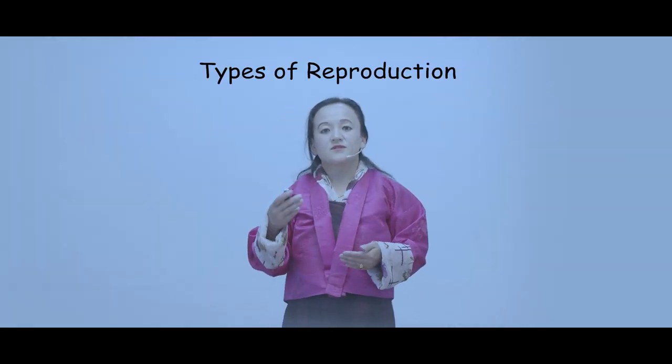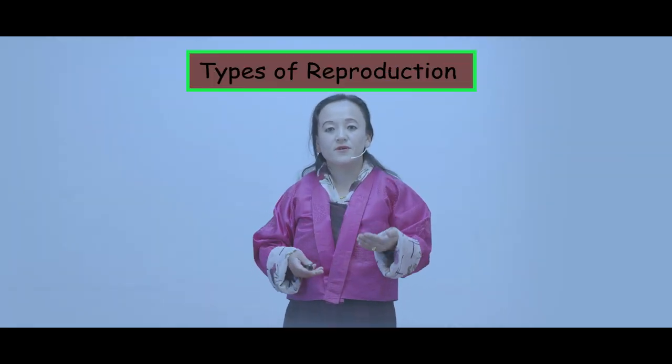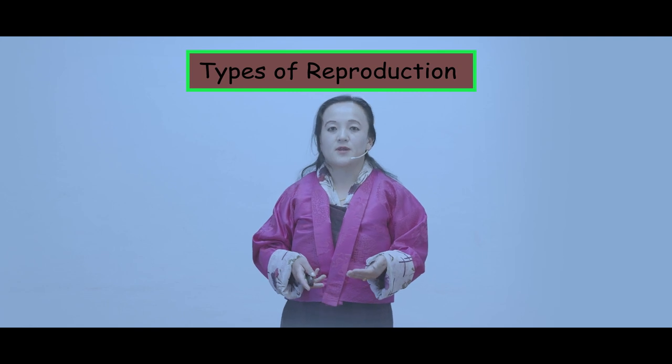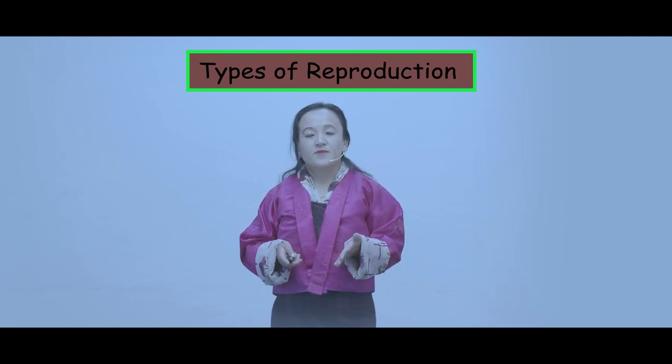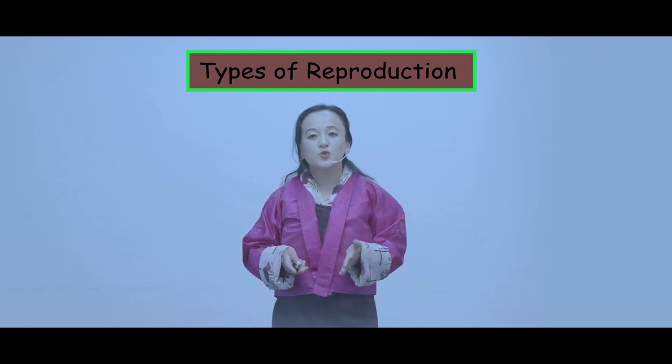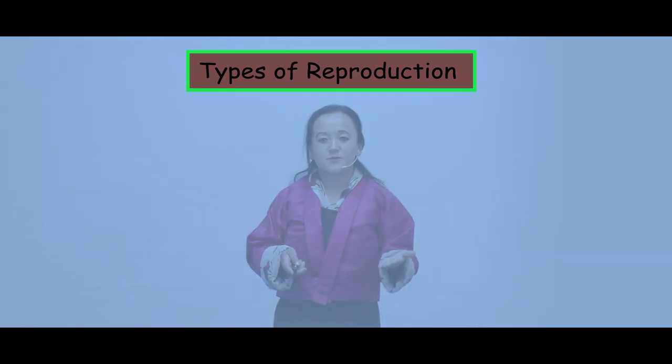Reproduction also acts as a vehicle for organic evolution by transmitting advantageous variations to the offspring. Now let us look at the types of reproduction. Basically, there are two different types of reproduction.